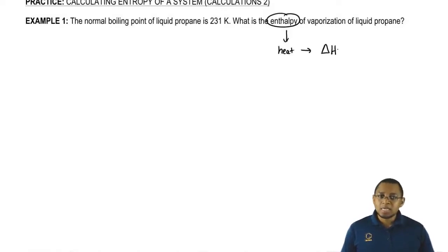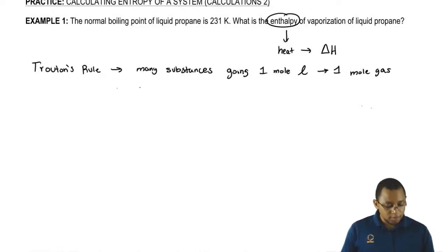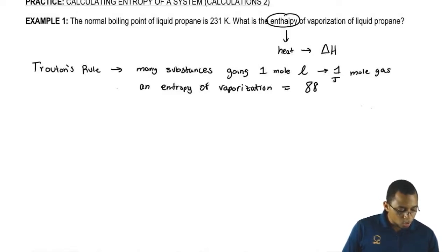This question is a little bit sneaky, but just realize it follows a major piece of theory when it comes to this chapter. This is called Troughton's Rule. Troughton's Rule says many substances, when they go from one mole of liquid to one mole of gas, they're going to have an entropy value, an entropy of vaporization that is equal to 88 joules over moles times K.